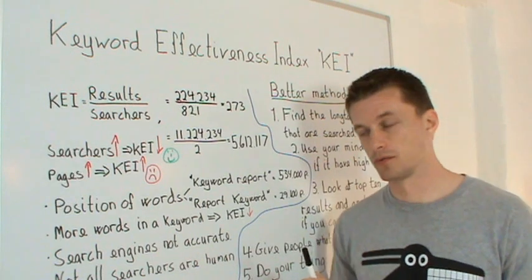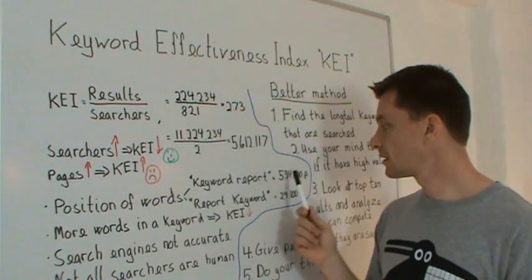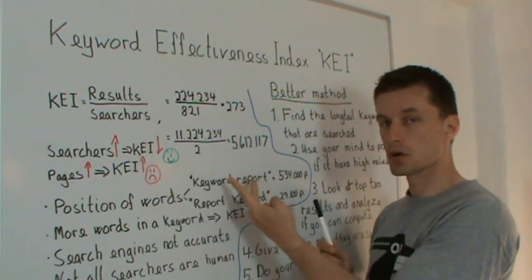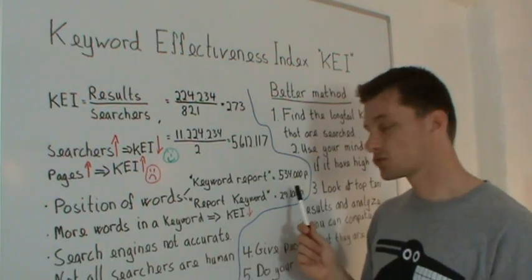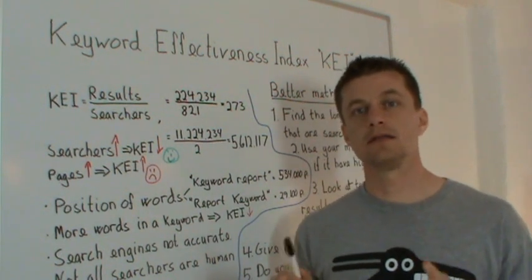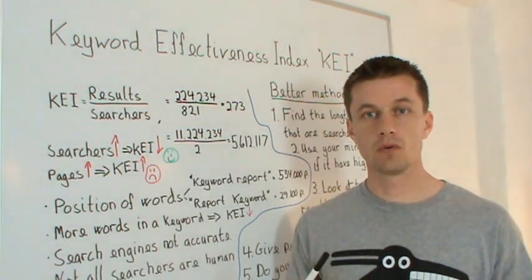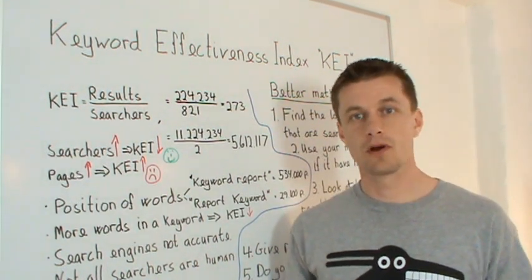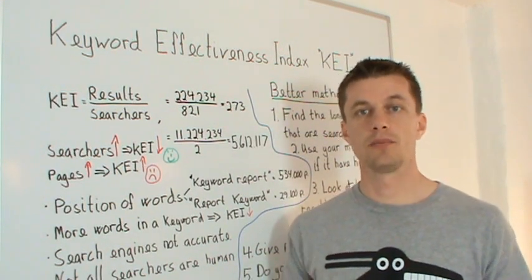Let's look at an example. If you search for keyword report you get 534,000 results in Google. If you change the order then you get report keyword and you will only find 29,100. And you are going to ask yourself is there 18 times less competition for report keyword than keyword report. And your answer is probably going to be no because if you search in Google you get more or less the same results in top 10. And that's what you are competing against.